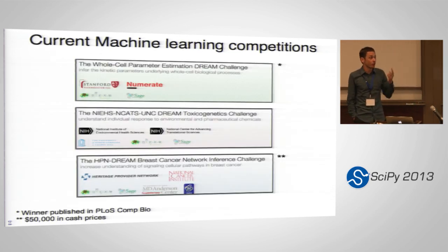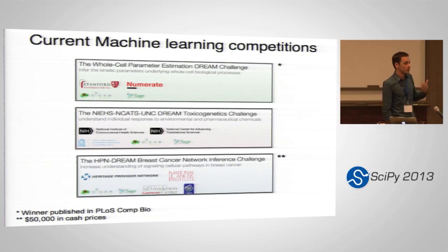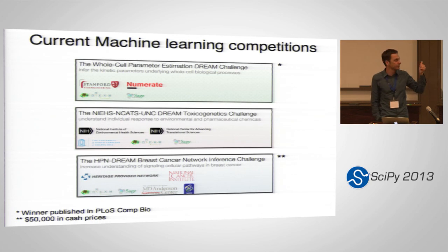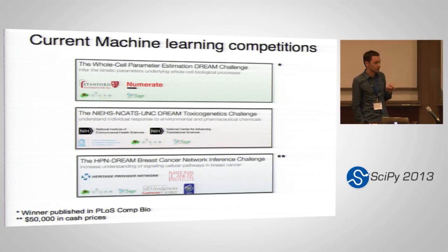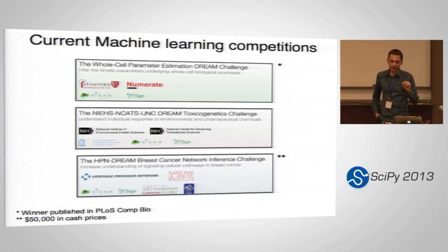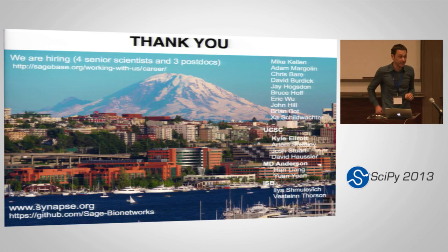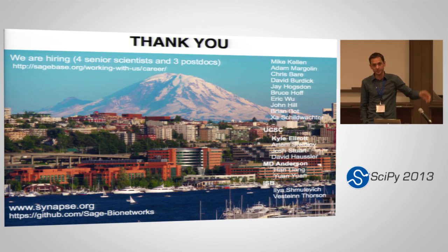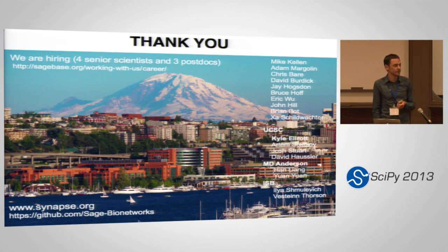Currently we're running three of these challenges. We partnered in February with DREAM, so DREAM is now running their challenges inside Synapse. If anyone is into machine learning, there's both glory and fame — the winner of the top challenge will get to publish in PLOS Computational Biology, and the bottom challenge has $50,000 in cash prizes. I'd like to end by thanking everybody who's been part of this project — people at Sage, our collaborators, and the TCGA. We're currently hiring: three postdoc and four senior scientist positions open. And yes, Seattle really is that beautiful. Thank you very much.